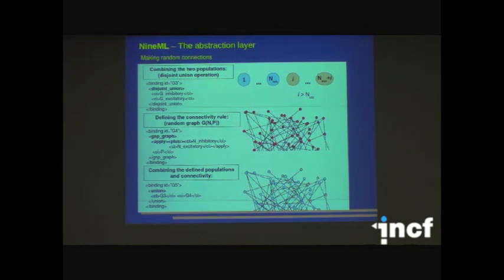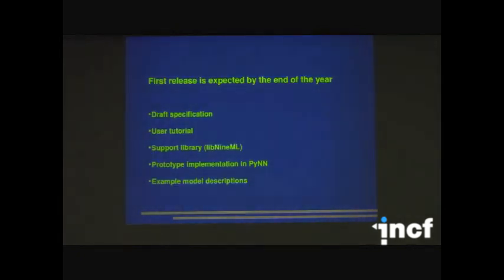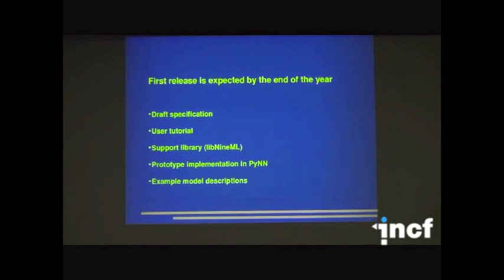Now here, what we want to do here is we have two populations, one population of excitatory neurons and another population of inhibitory neurons. We want to make random connections within and between them. In NineML abstraction layer, we first combine these two populations together and give it G3 as a whole population. And then we create a random graph with a number of vertices. This number n is the total number of neurons and the probability connection probability. And then in the third step, we give it a name G4. And in the third step, we combine these two together, G3 and G4 together, that creates a random network.